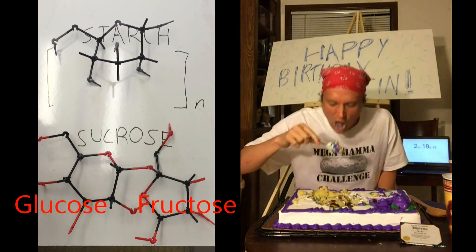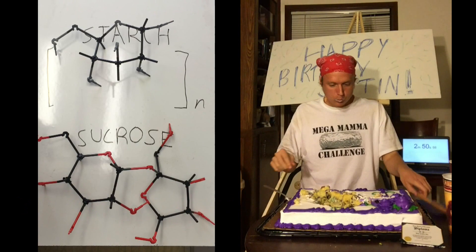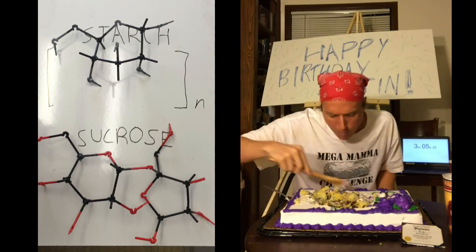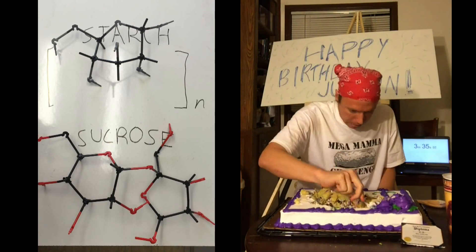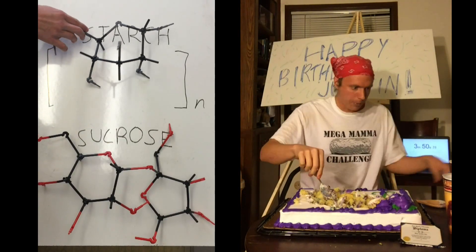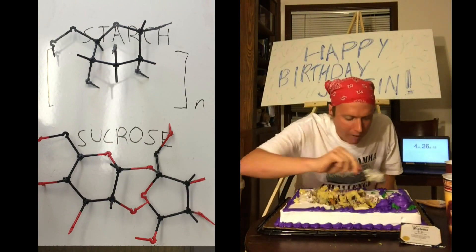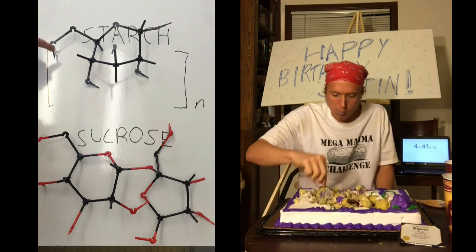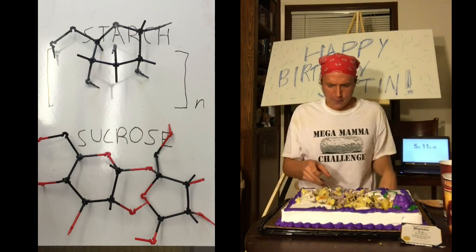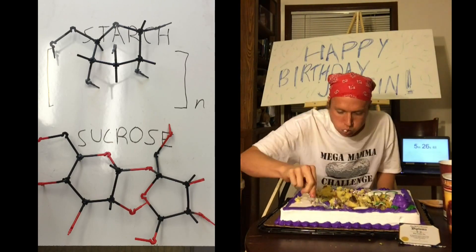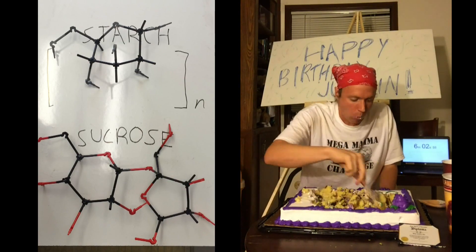Up here, we have a simplified view of starch. In this case, the gray atoms are oxygen because I ran out of reds. Starch is the main component in breads, tortillas, rice, and many other foods. It is a molecule called a polysaccharide — poly means many — and it is just a repeating chain of glucose molecules, hundreds if not thousands of units long. The easiest bonds to break in these molecules are the ones that connect the saccharide units, these oxygen atoms here. These bonds are broken down by your body's natural enzymes using a process called hydrolysis.